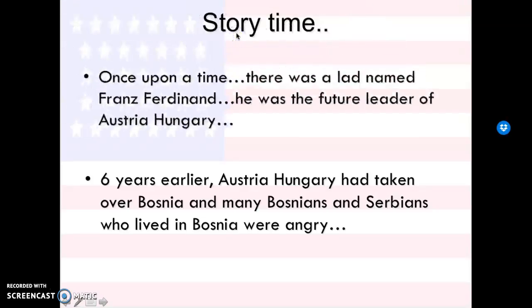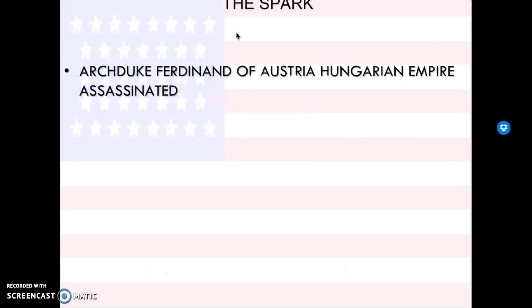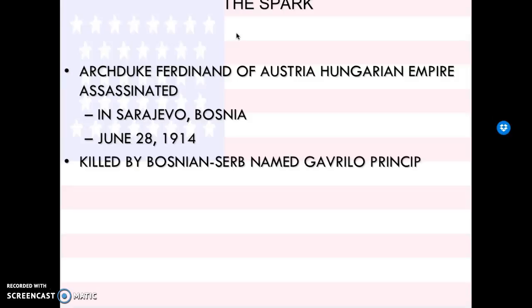So, story time. Once upon a time, there was a lad named Franz Ferdinand, and he was the future leader of a country called Austria-Hungary. Six years earlier, Austria-Hungary had taken over Bosnia, and many Bosnians and Serbians who lived in Bosnia were angry. This is what kind of starts the war. The Archduke Ferdinand of Austria-Hungary was visiting Bosnia, and while he was there, on June 28, 1914, he was assassinated by a Serbian.